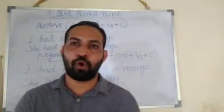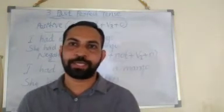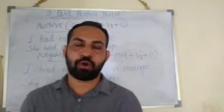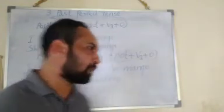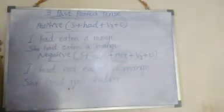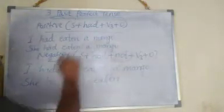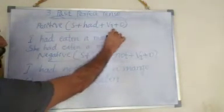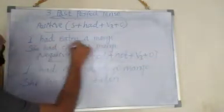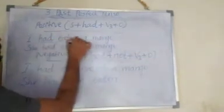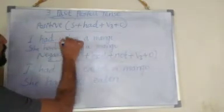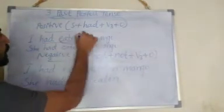Next you should learn how to form positive, negative, and interrogative sentences of this tense. Look at the board. To form a positive sentence, the format is always subject plus had plus V3 plus object. As you can see on the board: 'I had eaten a mango' — had is the auxiliary verb, 'eaten' is the V3 form. 'She had eaten a mango.'